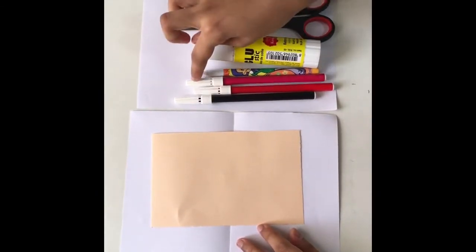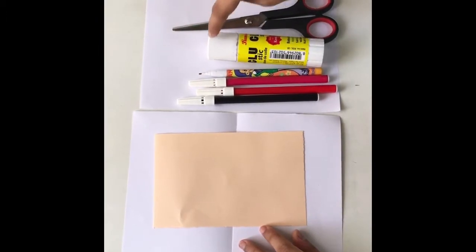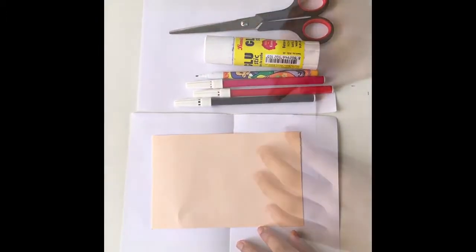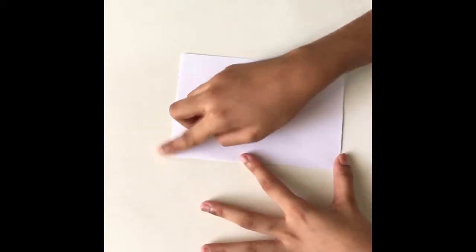So let's get started. First, take a white paper and fold it into half. Next, take the colored paper and take the glue. Now glue it.